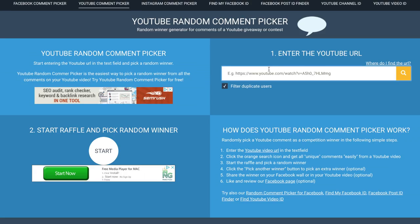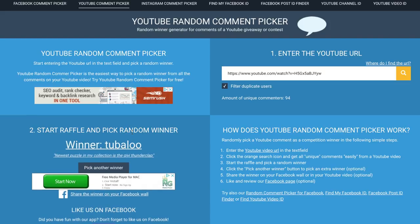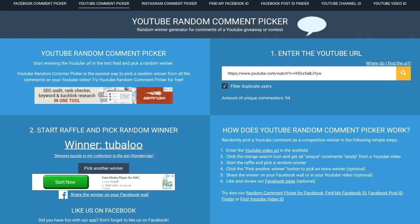So here I'm using a YouTube random comment picker I found online. I'm going to go ahead and paste the link in. Hit the search thing, filtering out duplicate users. So 94 unique comments. Let's go ahead and hit start and then pick the random winner. All right. So the winner of the Lattice Cube is Tubaloo, and his newest puzzle in his collection is the Chi Thunderclap.